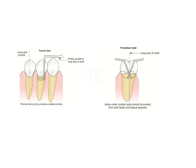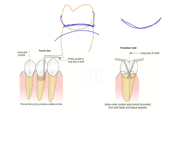In the interdental area, transgingival probing allows you to identify whether there is a crater, because your bone morphology follows the interdental surface shape. An osseous crater is a two-wall defect shaped like a crescent moon. As you run the probe, you feel different penetration levels, allowing you to identify the bone defect morphology. In your exam, if the option of raising a flap is available alongside transgingival probing, the answer should be raising a flap and observing the bone defect.